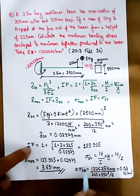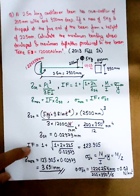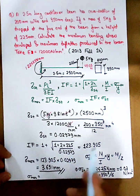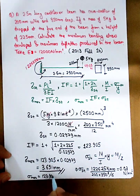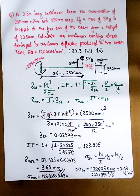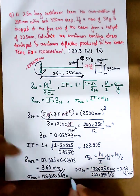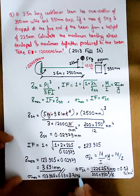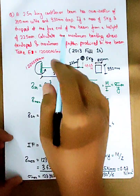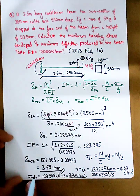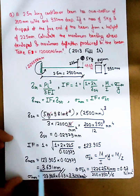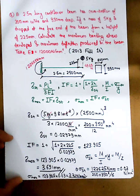Sigma max = impact factor × sigma static = 123.905 × 0.03 = 3.72 N/mm². Final answers: maximum bending stress sigma max = 3.72 N/mm², and maximum deflection delta max = 3.691 mm.